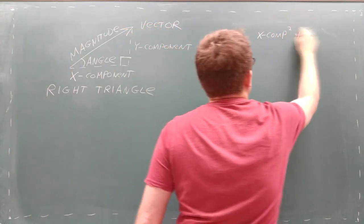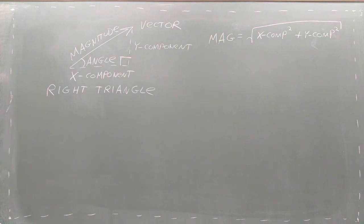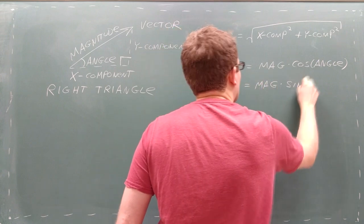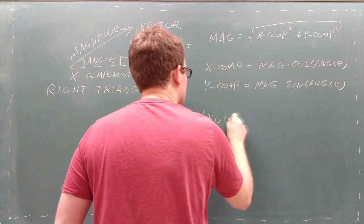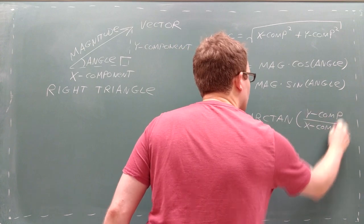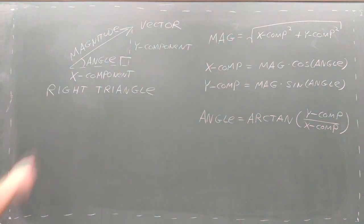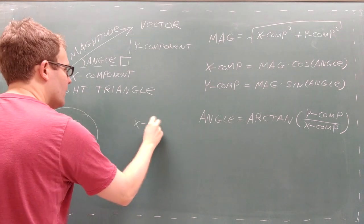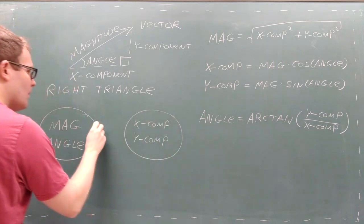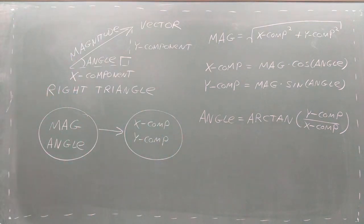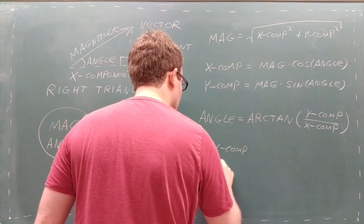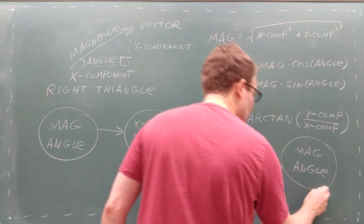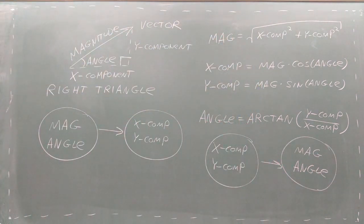For example, the magnitude is related to the x and y components by the Pythagorean Theorem. The x and y components are related to the magnitude and the angle by the sine and cosine functions. And the angle is related to the x and y components by the arctangent function. It's important to become familiar with these four relationships, because you never know which of these four pieces of information you will need in a physics problem. In particular, you need to be able to take a vector's magnitude and angle and use them to find the x and y components, and you need to be able to take a vector's x and y components and use them to find the magnitude and angle.